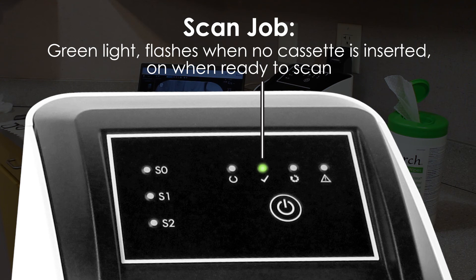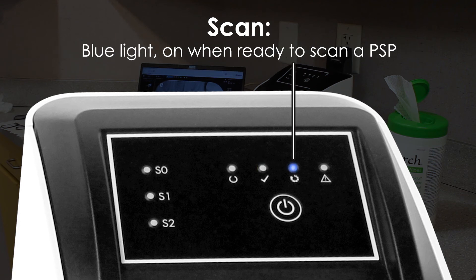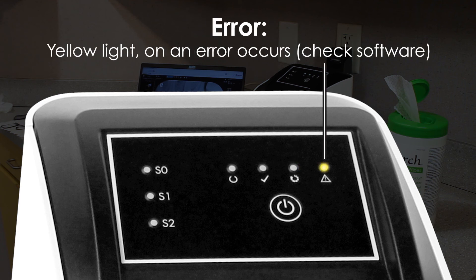However, if we forgot to insert a cartridge into the scanner prior to activating the ScanX, we will see it flash green. Once we've set the scan job from the imaging software to the ScanX Edge, the scan LED will illuminate blue indicating we're ready to insert a plate. If the system ever were to encounter an error, the error status light indicator will illuminate yellow. Please check the software status for further troubleshooting efforts.